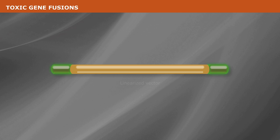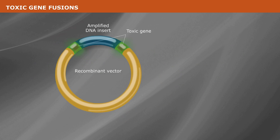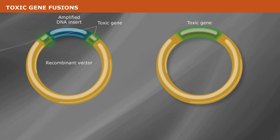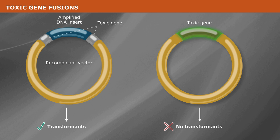Some supplied vectors can contain a toxic gene. The use of toxic gene fusions ensures that only competent cells that have taken up the vectors with successful insertion of the target gene sequence survive, as the insertion disrupts the expression of the toxic gene. These vectors are known as suicide vectors.